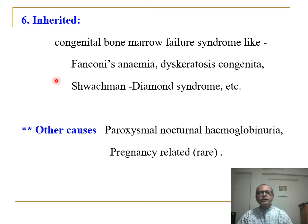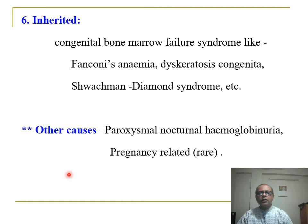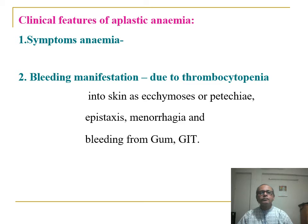Inherited congenital bone marrow failure syndromes include Fanconi anemia, dyskeratosis congenita, and Shwachman-Diamond syndrome. Other causes include paroxysmal nocturnal hemoglobinuria and pregnancy — though this is rare.